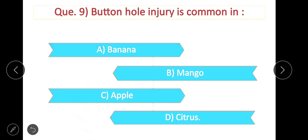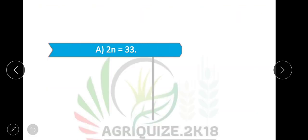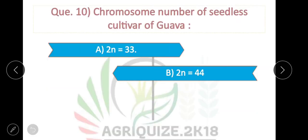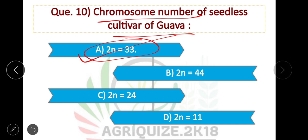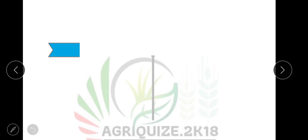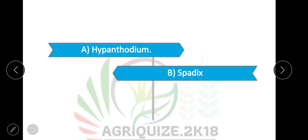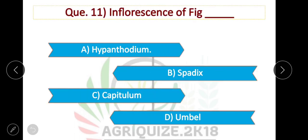Next question: The chromosome number of the seedless cultivar of guava — the correct answer is 2n = 33. 33 is the chromosome number of the seedless cultivar of guava. Question number 11: The inflorescence of fig is called — option is correct — the inflorescence of fig is called a hypanthodium.